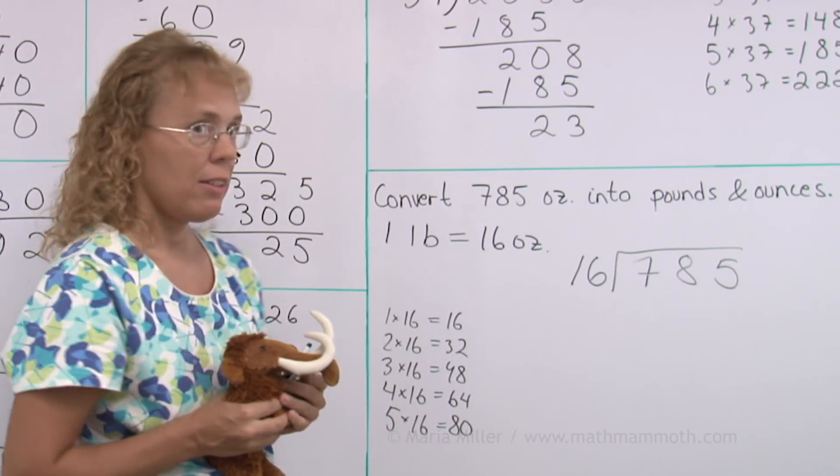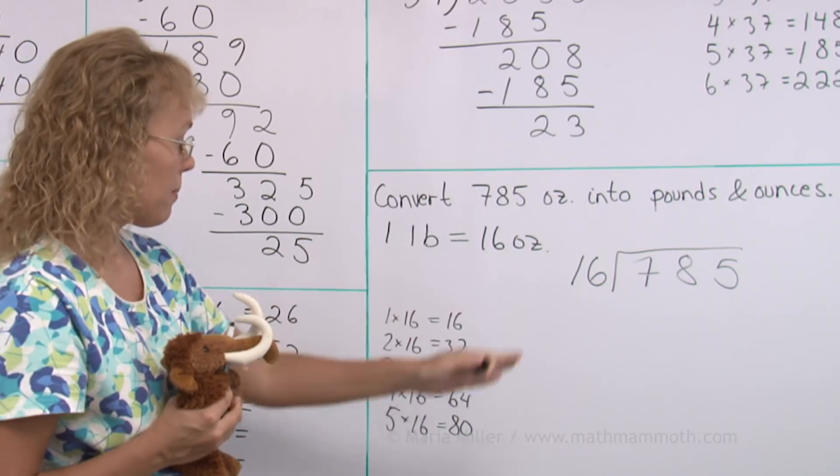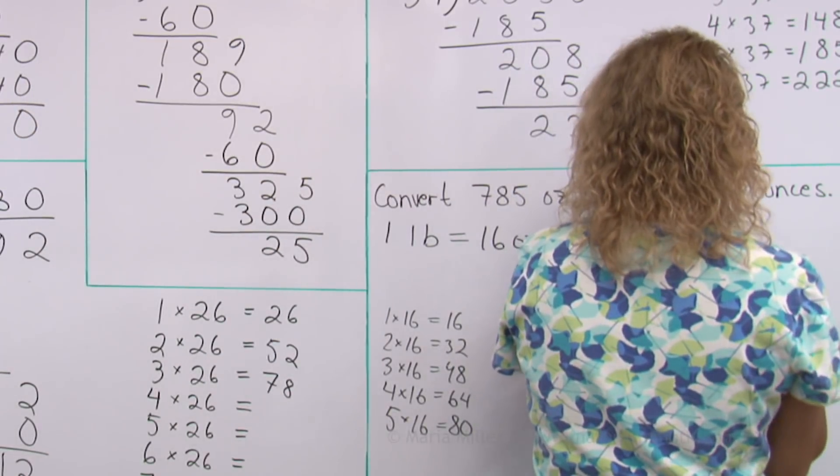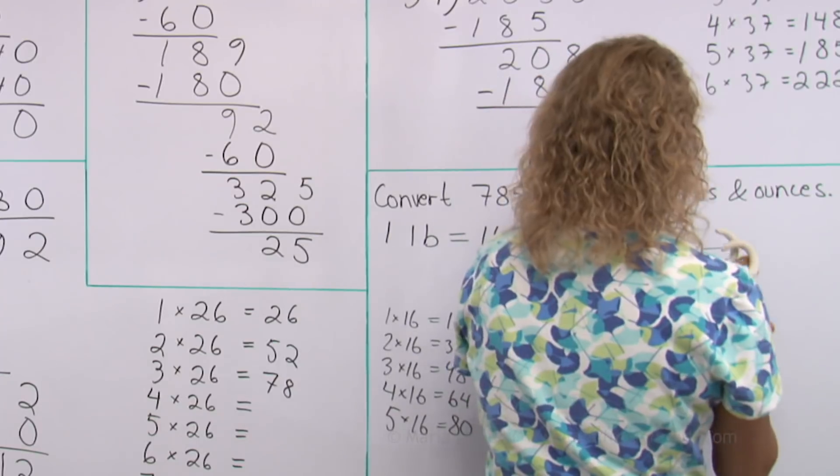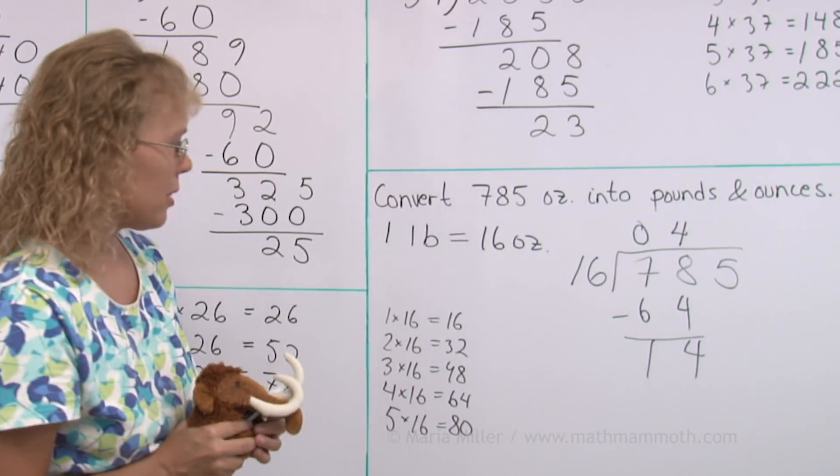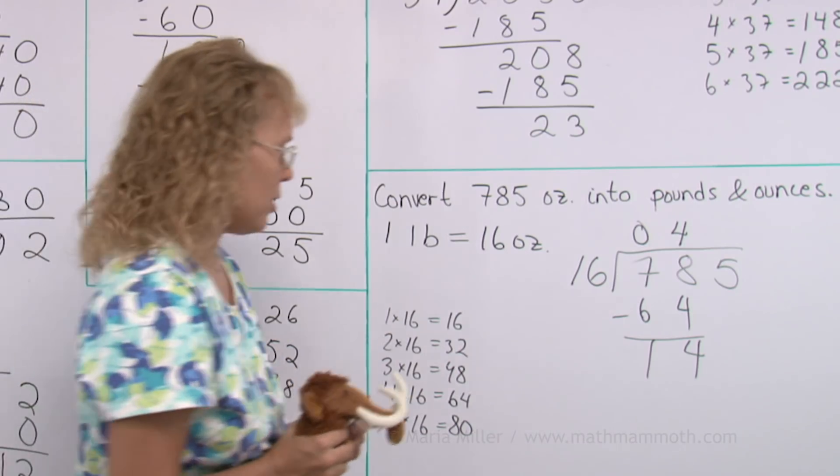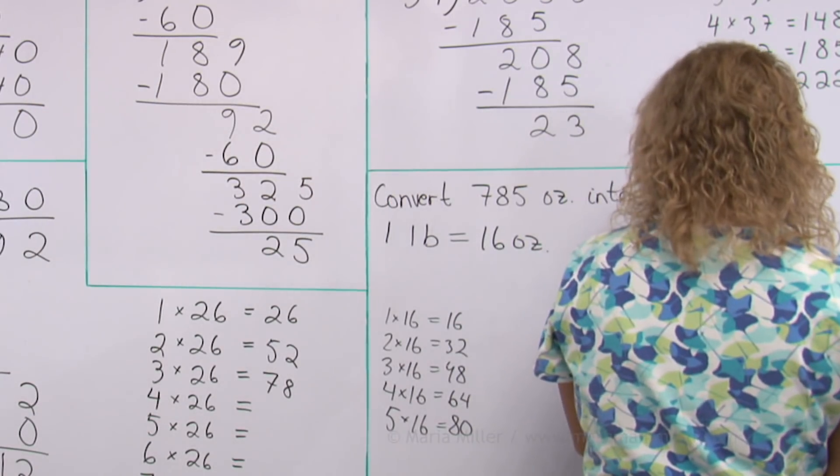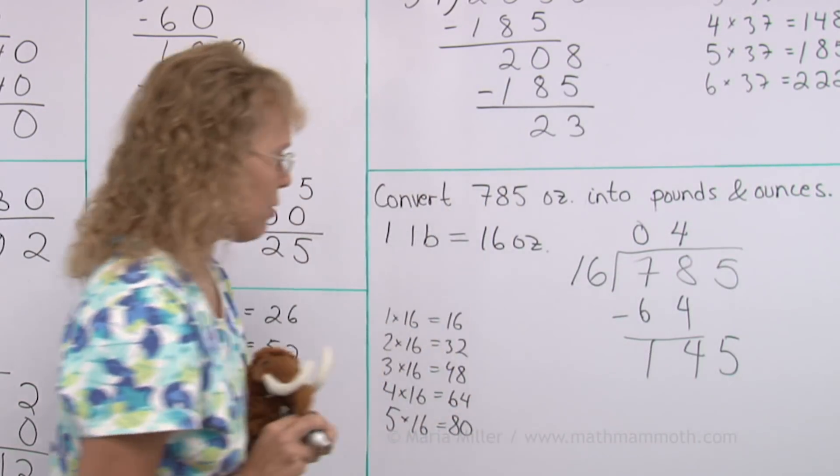Okay. 16 goes into 78. How many times? Can you see? Alright. 4 times. Matthew has 14 there. Now you need to drop down the digit. Right? 5. Now we have 145.